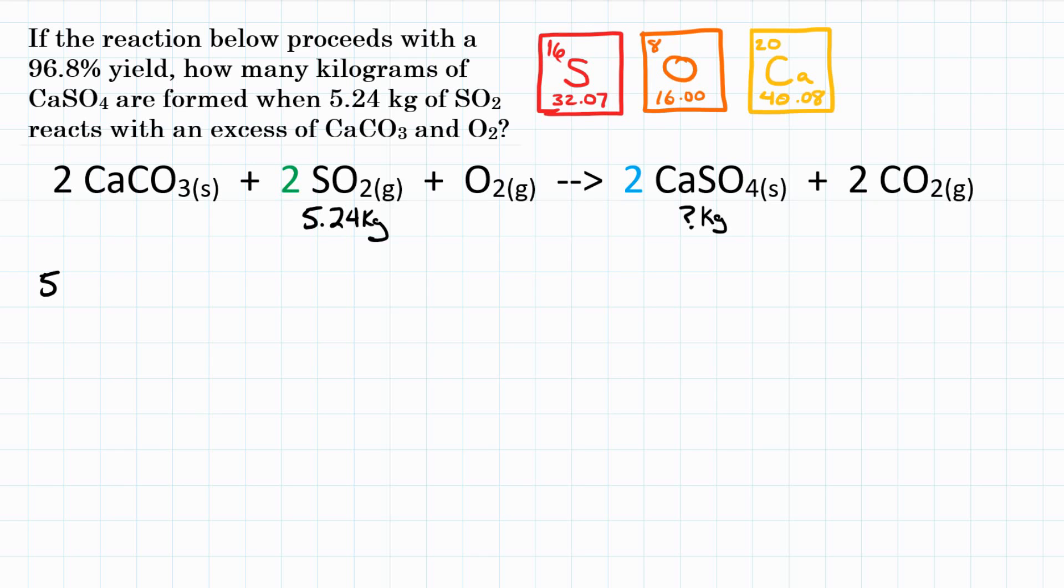So let's first take 5.24 kilograms of SO2, and let's turn that into just regular grams of SO2. So we're going to do a conversion where we're getting rid of kilograms and turning into grams. What's the relationship between grams and kilograms? Well, a thousand grams, or 10 to the third grams, is one kilogram. So our units will cancel out, and we're essentially doing 5.24 times a thousand. So that's going to give us 5,240 grams.